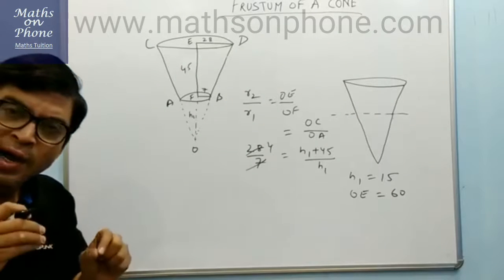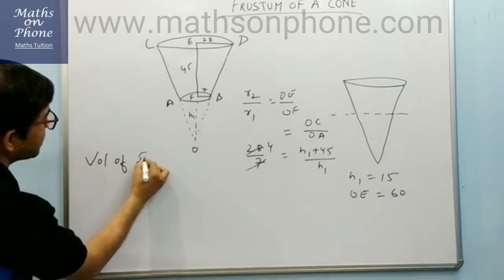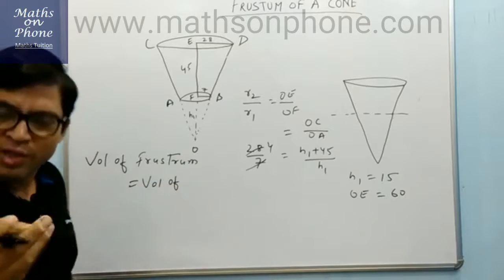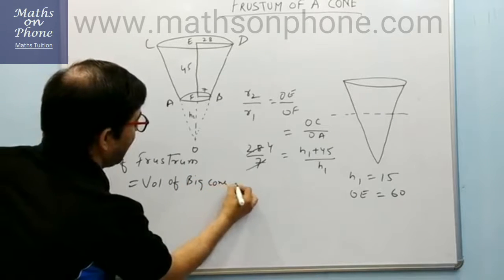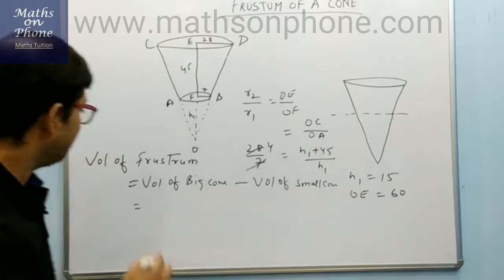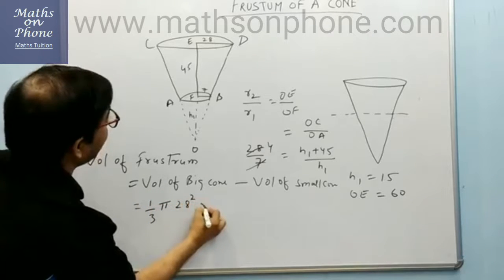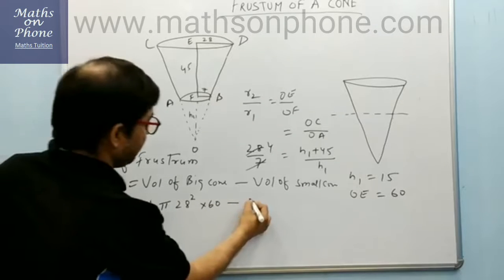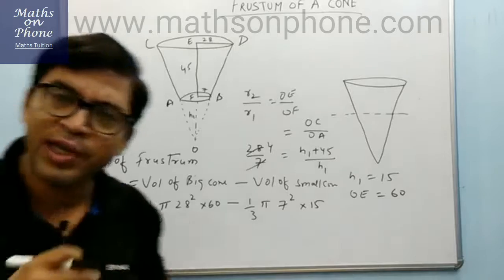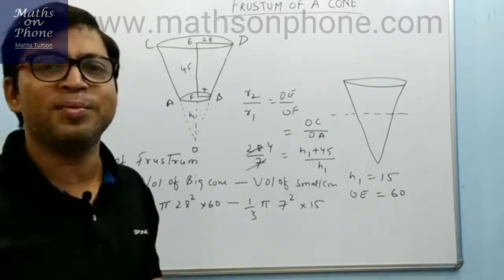Now we have the heights and radii, so we can find the volume easily. Volume of frustum = volume of big cone − volume of small cone. We know volume = (1/3)πR²H. So: volume of big cone = (1/3)π(28²)(60), and volume of small cone = (1/3)π(7²)(15). Solving this gives us the volume of the frustum. That is the only technique — all frustum problems, including buckets or toy shapes, are solved this way.